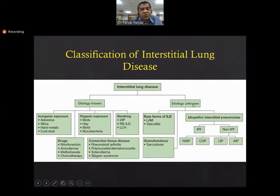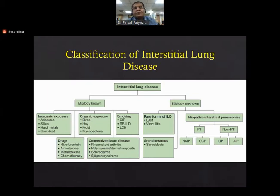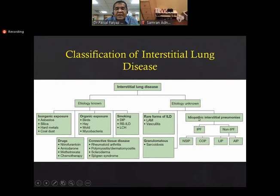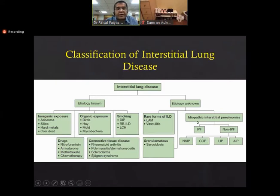There is a large group where the etiology is not known. Here the main group is called IIP — idiopathic interstitial pneumonia. IIP is broadly divided into two main forms: IPF, which stands for idiopathic pulmonary fibrosis, and non-IPF. This distinction is very important because it has pathophysiological and treatment implications. Sometimes when people say ILD, they are referring only to the IIP group and forgetting about the rest.